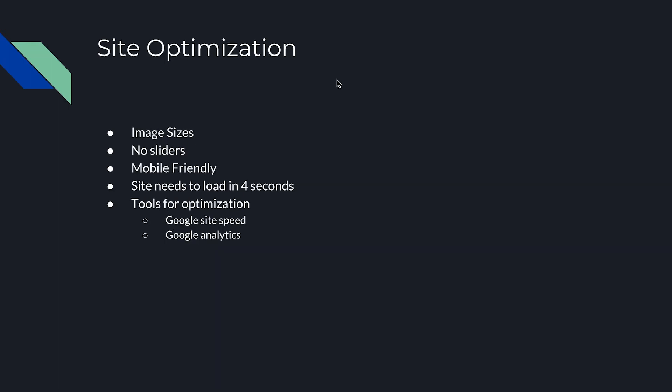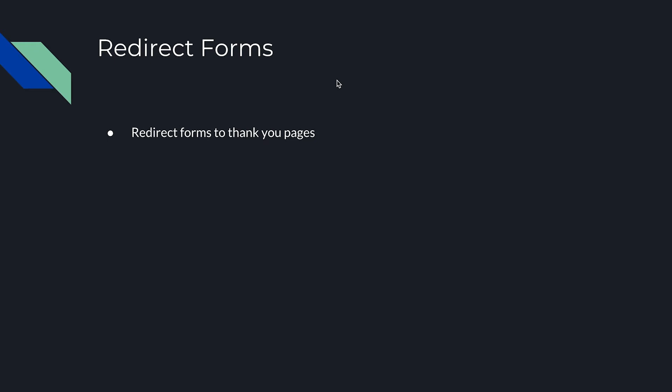Site optimization. A lot of times sites don't load fast enough because of wrong image sizes. Make sure your image sizes are sized properly — I recommend 50 KB to 70 KB, which I've found loads fastest. Don't use sliders on your website; they slow it down. Your site needs to load in four seconds. You can check all this with Google Site Speed and Google Analytics — free tools that tell you how fast your pages are loading.